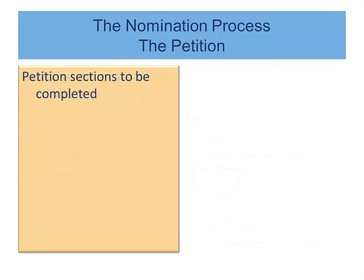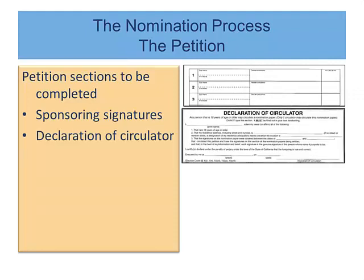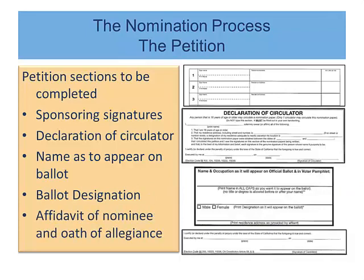In the remaining fields of the petition, the candidate is required to complete the petition by obtaining sponsoring signatures, completing the declaration of circulator, listing how the candidate wants his or her name to appear on the ballot, listing a ballot designation, and completing the affidavit of nominee and oath of allegiance. As the regulations for ballot designations are lengthy and complicated, those instructions are covered in a separate video.